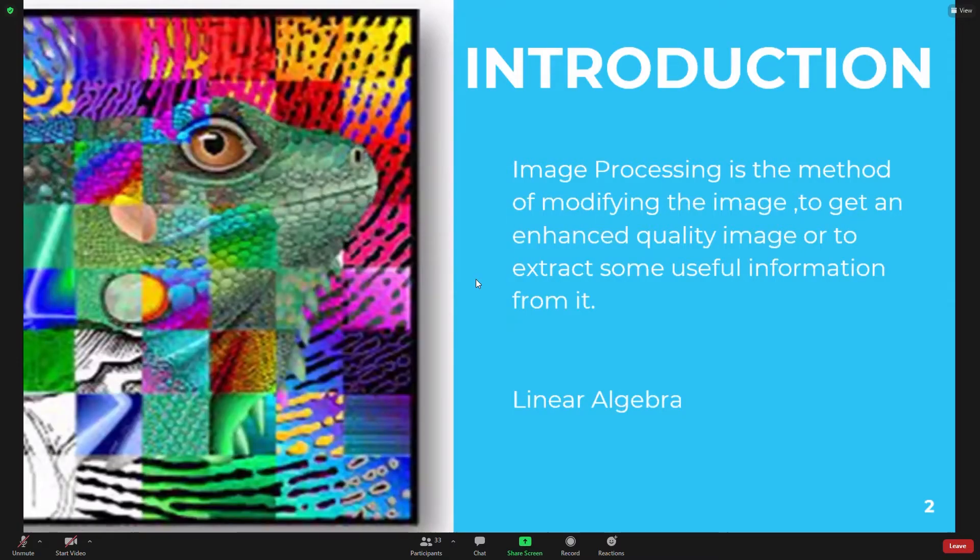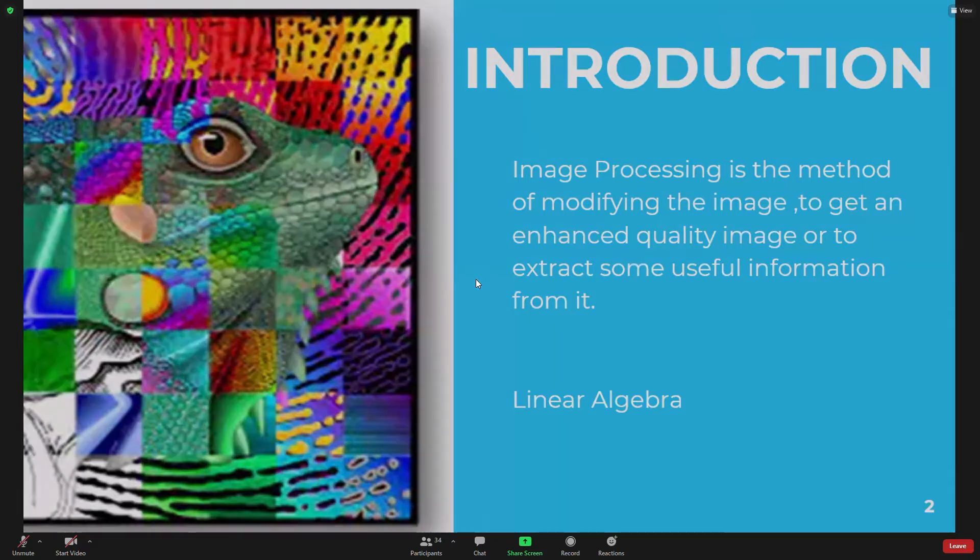I would like to introduce this topic with the definition of image processing. Image processing is the method of modifying an image to enhance image quality or extract useful information from it. There are two types: analog image processing and digital image processing. Digital image processing deals with processing digital images using computers. For this purpose, mathematics is required. Linear algebra plays an important role in image processing. Let us discuss some terms used in this presentation.